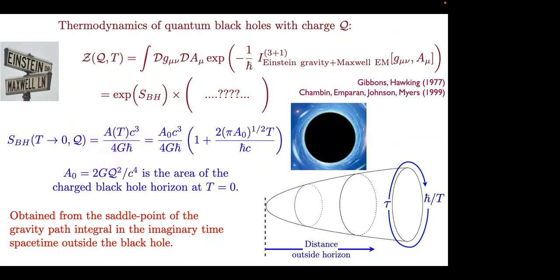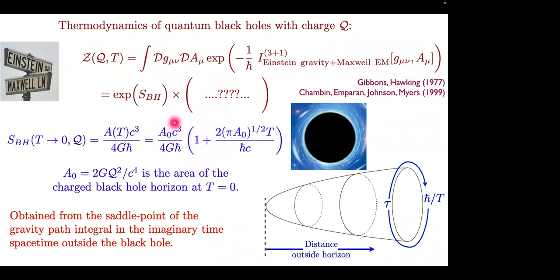The result involves an ℏ that comes in from the definition of temperature — that's really the only place it comes in. The area is the area of the horizon, and you can also solve Einstein's equations in the low-temperature limit. The area is a constant plus a term linear in temperature, so the entropy in the zero-temperature limit — the extremal limit — is some number times the area, and then there's a linear temperature correction.